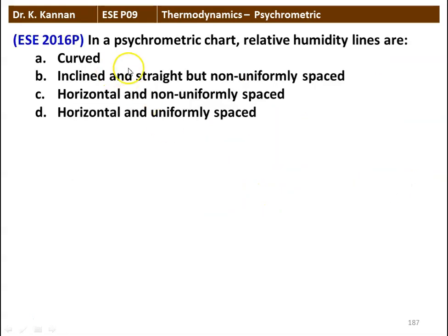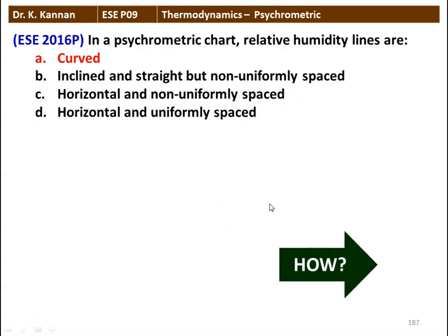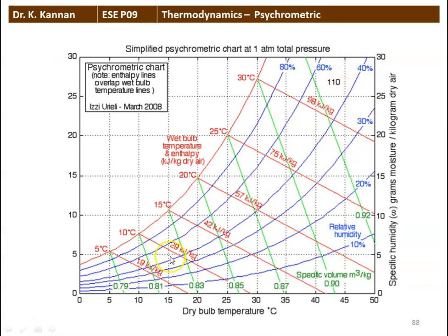Next question: in a psychrometric chart, relative humidity lines are curved, inclined and straight but not uniformly spaced, horizontal and non-uniformly spaced, or horizontal and uniformly spaced. The correct answer is: curved. Relative humidity lines are curved lines. On the psychrometric chart, the blue color lines are the relative humidity lines at 10%, 20%, 30%, 40%, 60%, and 80%, and the red color line is saturated air at 100% relative humidity.